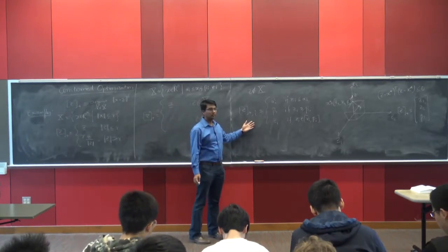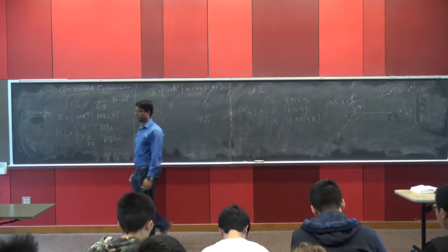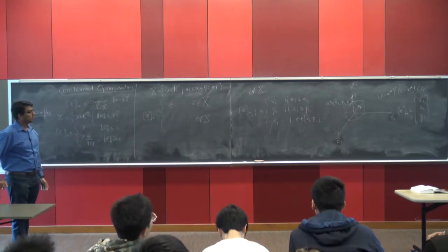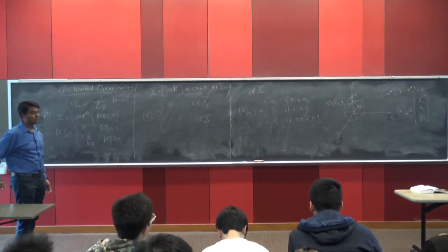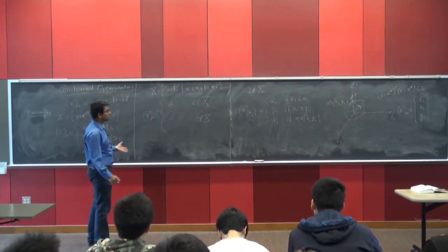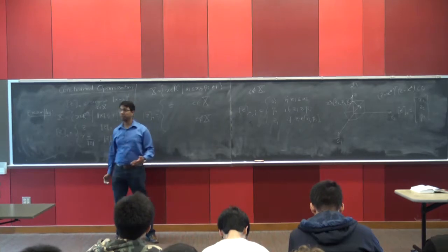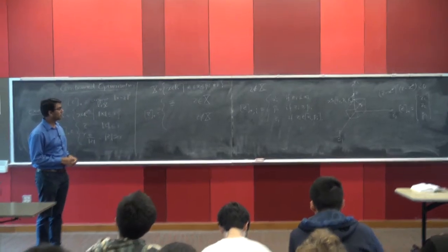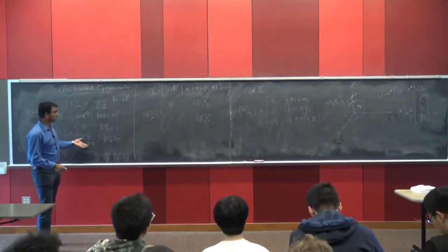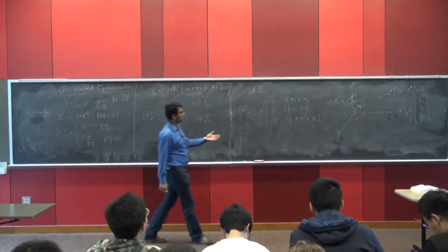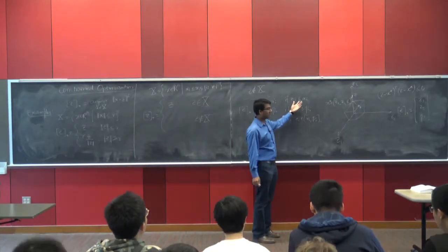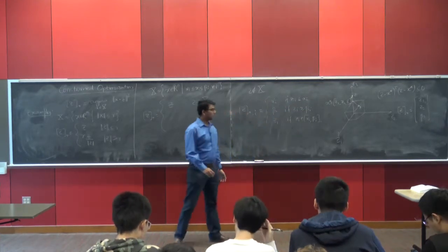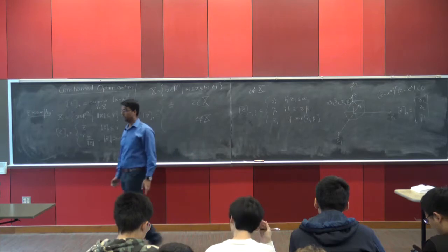Is this clear? So in these two cases, projection is a fairly simple operation. In the sphere case it's scaling; in the box case you look at individual components, compare their magnitude with α_i and β_i, and figure out what the projected variable should be.